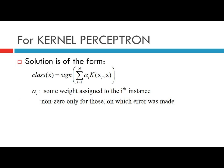A general decision rule for the kernel perceptron learning algorithm is that the class of a training instance x is decided by the sign function of the sum over all training instances: sum over i from 1 to N of alpha_i times K(xi, x), where K is the kernel function and alpha_i is a weight assigned to the i-th instance. Alpha_i is non-zero only for those training instances on which an error was made.